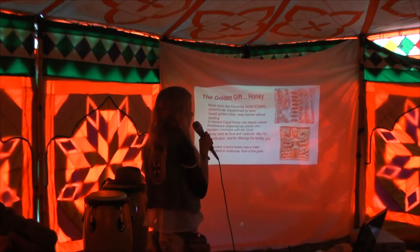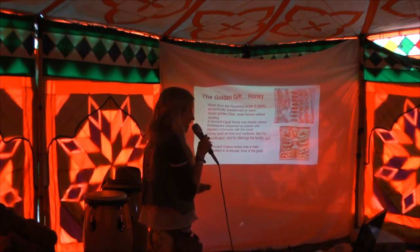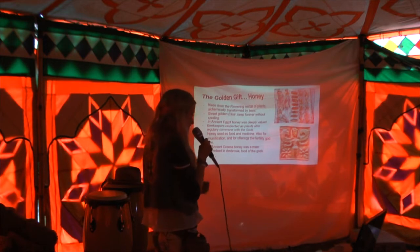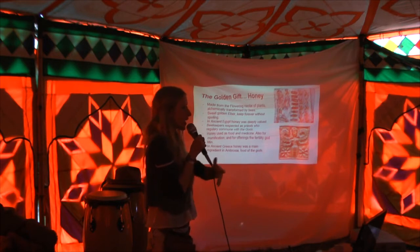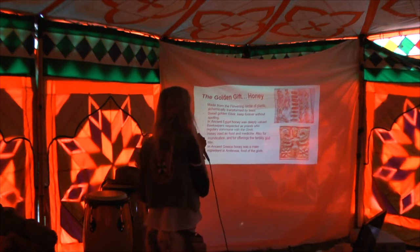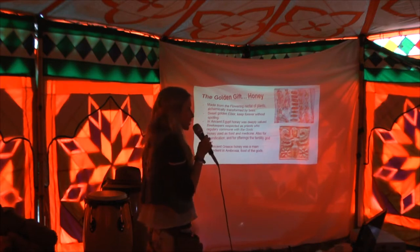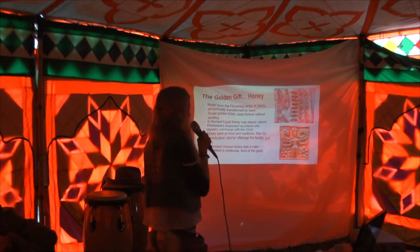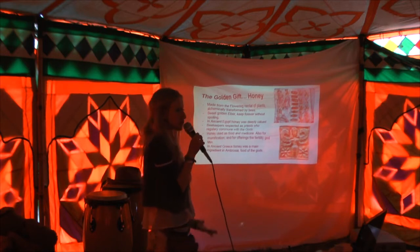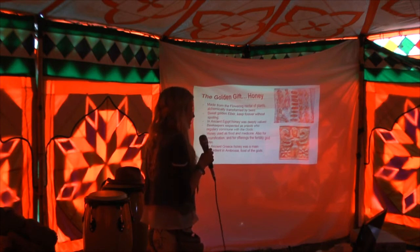Honey is made from the flowering nectar of plants, alchemically transformed by the bees — the great alchemists. The nectar transforms into this golden rich substance. Many people have heard that honey can keep forever without spoiling, which alludes to this idea of immortality. There's that story of the ancient Egyptian tombs — finding honey that's still good after thousands of years.